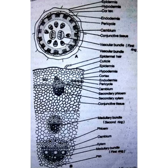Cambium develops secondarily from the pericycle and becomes active. It causes secondary phloem towards the outer side and secondary xylem towards the inner side. Due to these changes, the primary phloem becomes crushed and is present next to the pericycle, and the primary xylem is situated near the pith. The last feature is the pith, which is well developed, parenchymatous, and present in the center.